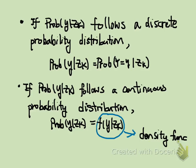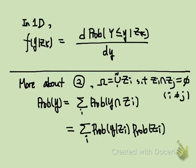For the probability of Y given Zk, if the probability follows a discrete probability distribution, then it is replaced by the probability that Y equals small y given Zk. In case the probability is from a continuous probability distribution, then it is replaced by the density function f of y given Zk. The density function is the derivative of the cumulative distribution function. For example, in 1D, if we differentiate the probability that Y is less than or equal to small y given Zk with respect to y, we get the density function.